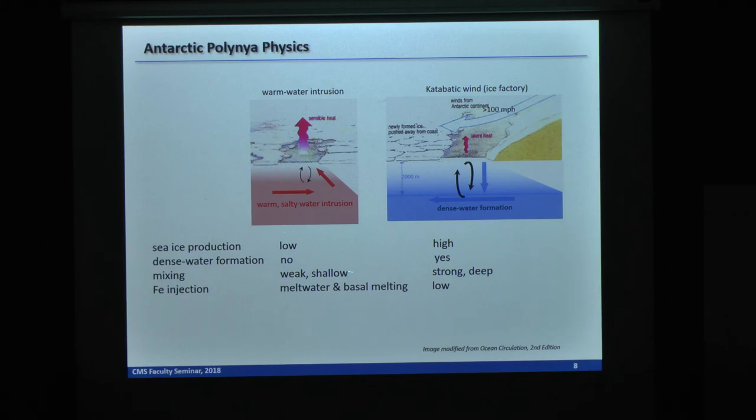And also considering biological effects, the iron injection from the two types are different. Those polynyas usually involve basal melting and sea ice melting. So the two factors bring additional iron and cells into the polynya that can cause enhanced primary production immediately after sea ice retreat. Well, this type of polynya, because of the lack of iron injection, is usually very poor in iron. And also if we consider primary production, usually we will see very intense bloom in this type of polynya and bloom a lot weaker in this type of polynya.